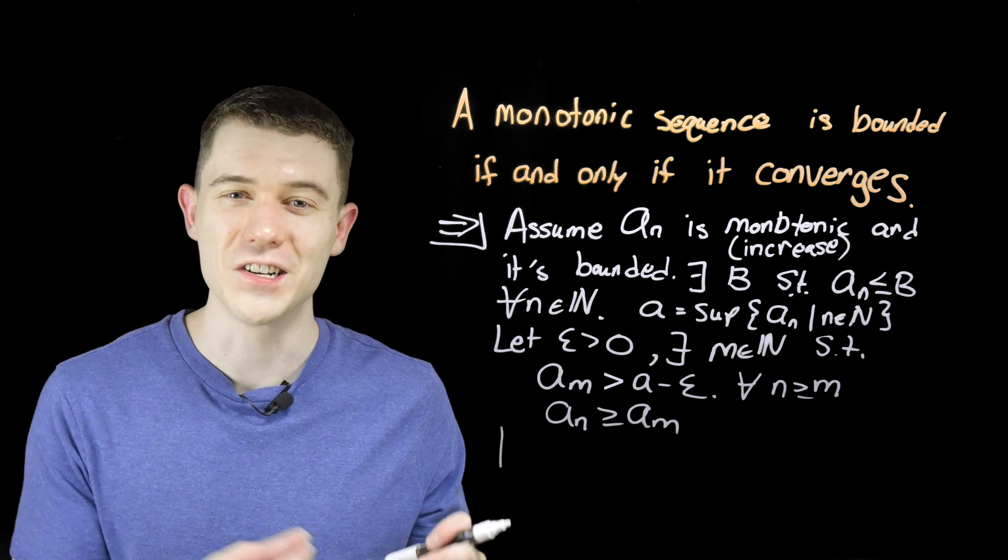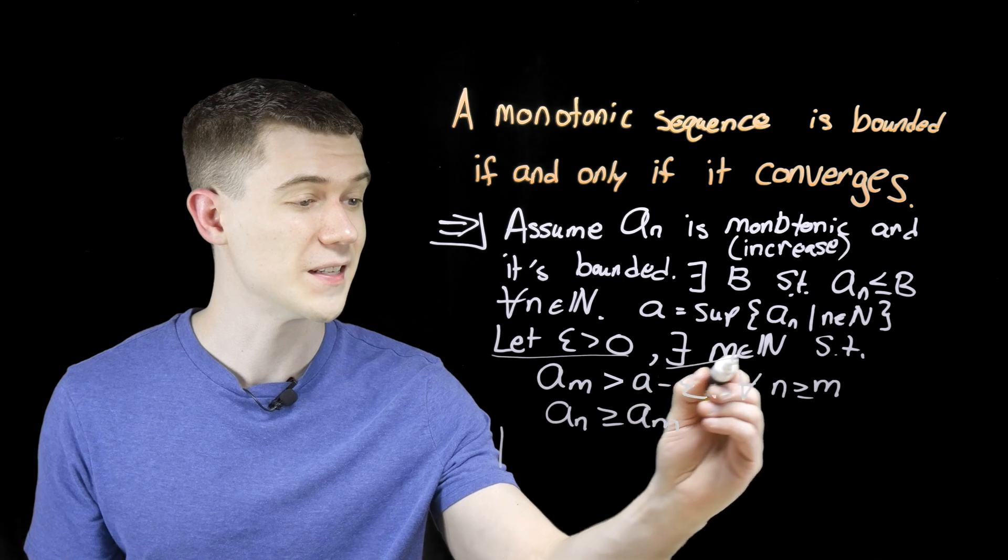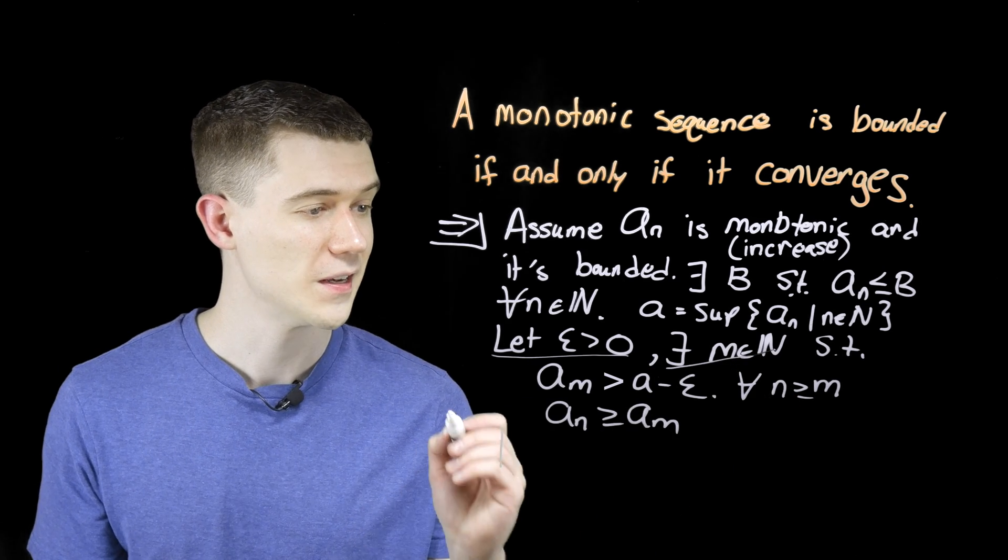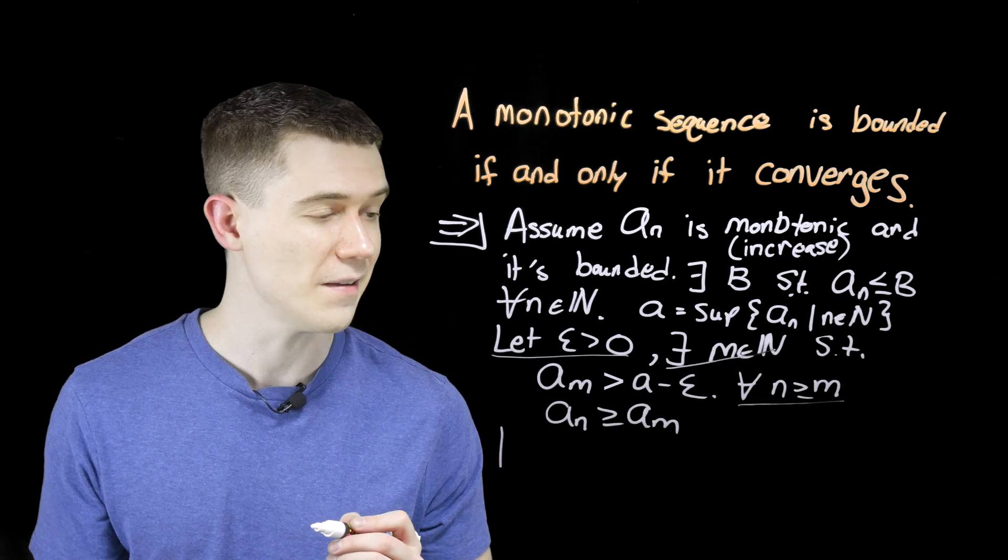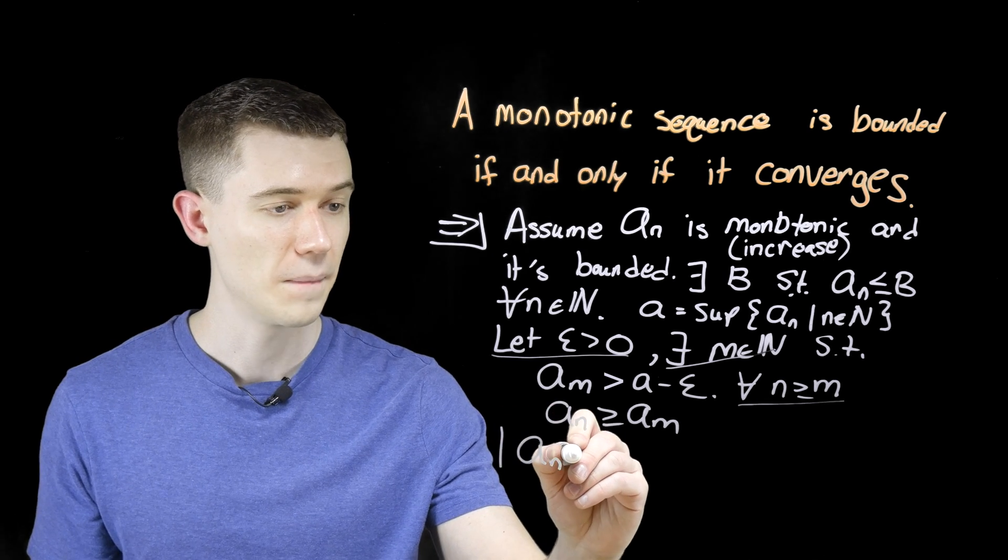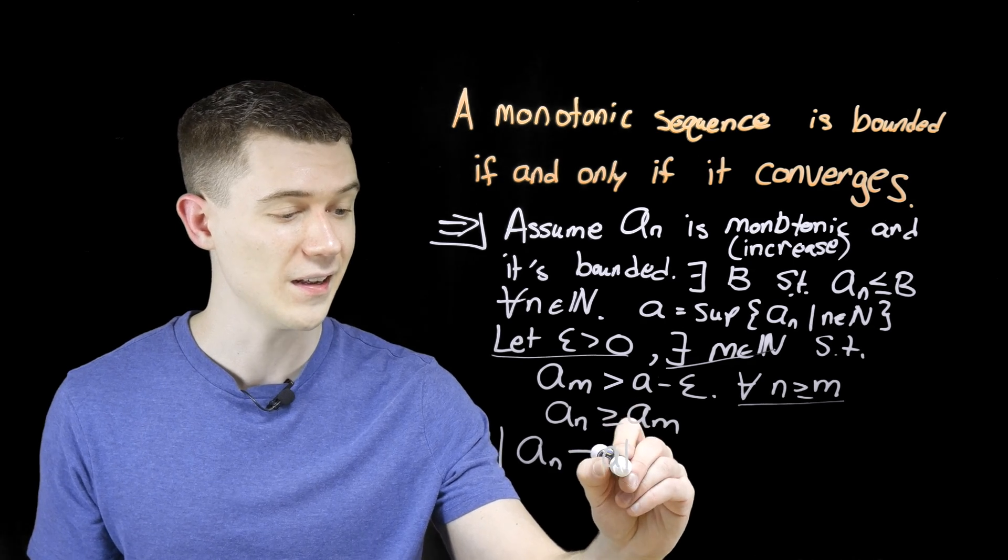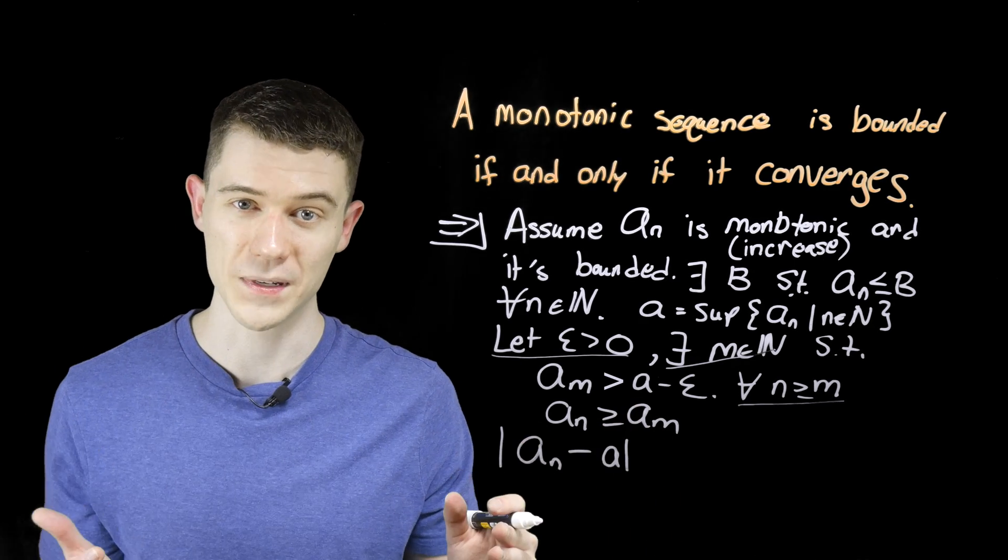Now let's write that definition of a convergent sequence. Letting epsilon greater than zero, there exists an element in the natural numbers such that for all elements after that m, the absolute value of our sequence minus its limit, which is going to end up being a, I want this to be less than epsilon.